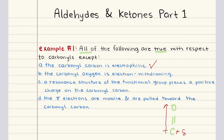Option B states that the carbonyl oxygen is electron withdrawing. This is also true. Oxygen is highly electronegative, so it withdraws electron density from the carbonyl carbon, contributing to the partial positive charge on the carbonyl carbon and the partial negative charge on the oxygen.